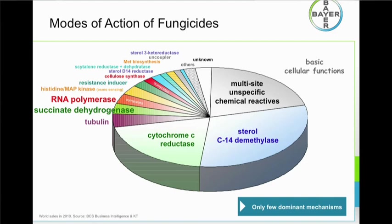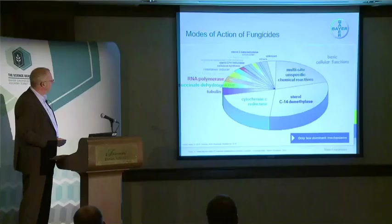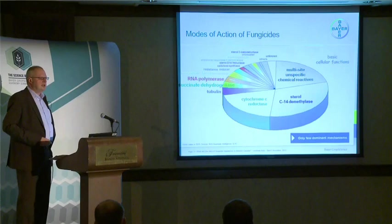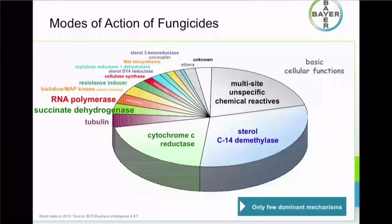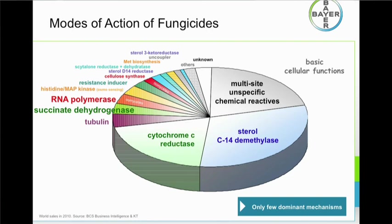A new class I would also like to cover are the succinate dehydrogenase inhibitors, or SDHI fungicides. They are increasingly being introduced into the market worldwide. Examples in Canada include the BASF product Lance with the active ingredient boscalid, as well as Vertisan from DuPont with the fungicide penthiopyrad. You can see an overview of these chemistries on the FRAC webpage.